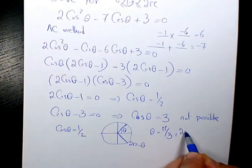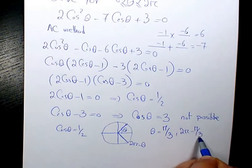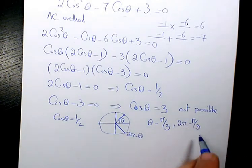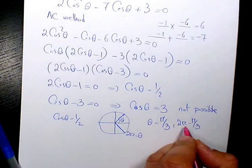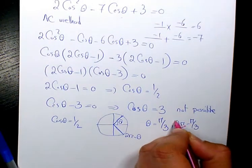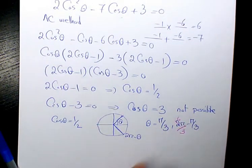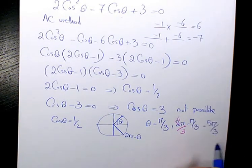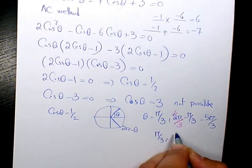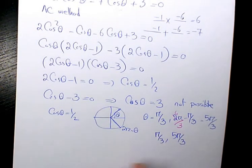So that will be 2 pi minus pi over 3, because theta is pi over 3. And then we solve it by having common denominators. So here we have 3. If you multiply it here by 3, it's going to be 6. So 6 pi minus pi is going to be 5 pi over 3. So the two answers are pi over 3 and 5 pi over 3.